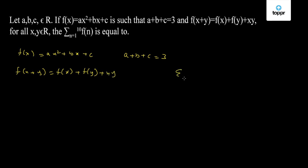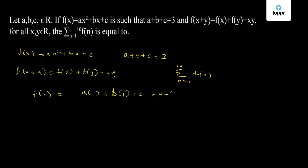We need to find summation n = 1 to 10 of f(n). For that we need f(1) first. f(1) = a(1) + b(1) + c = a + b + c, which is given to be 3.